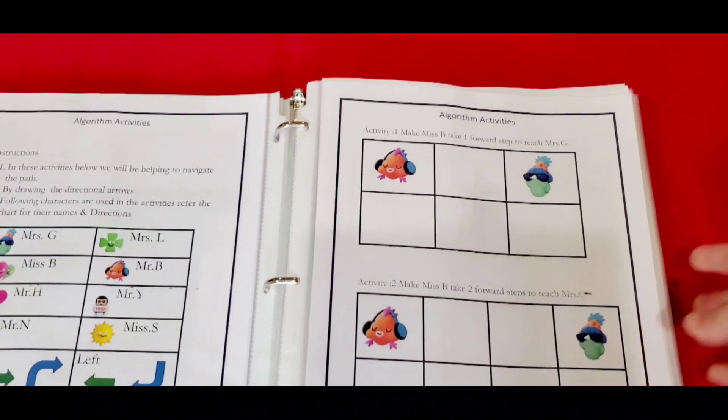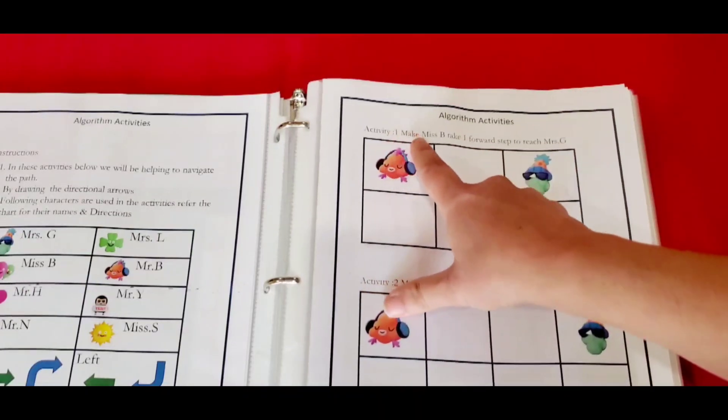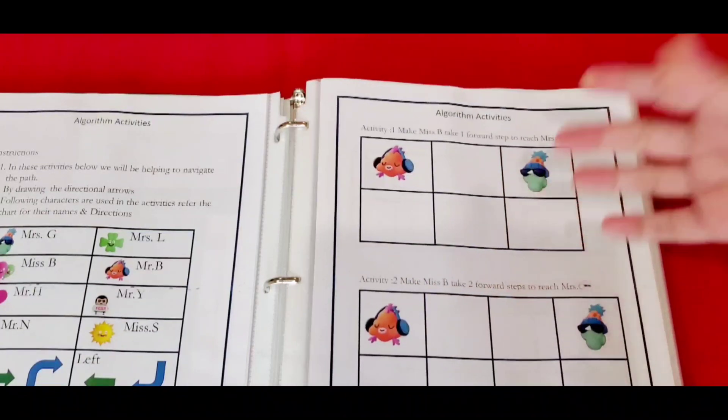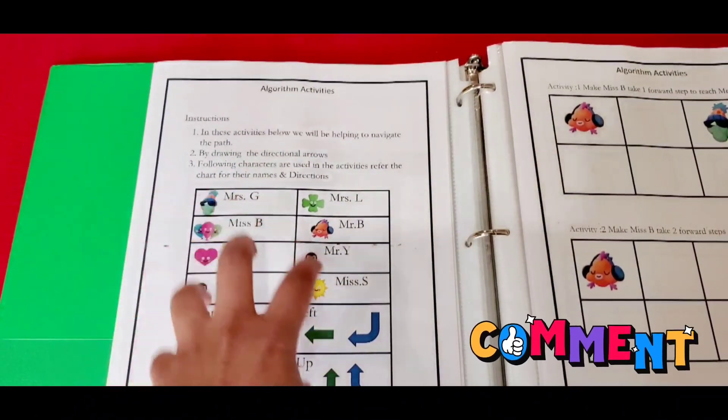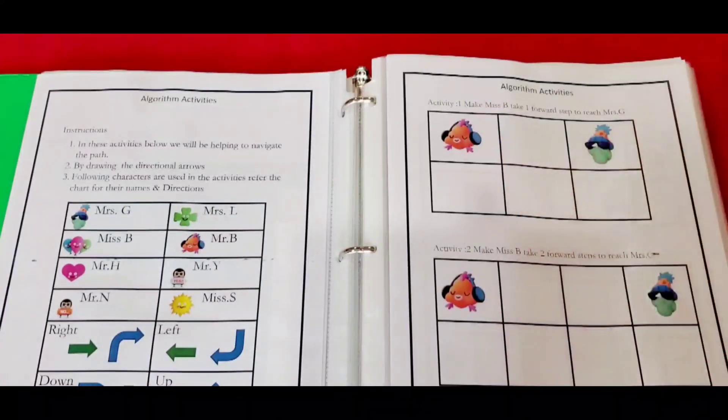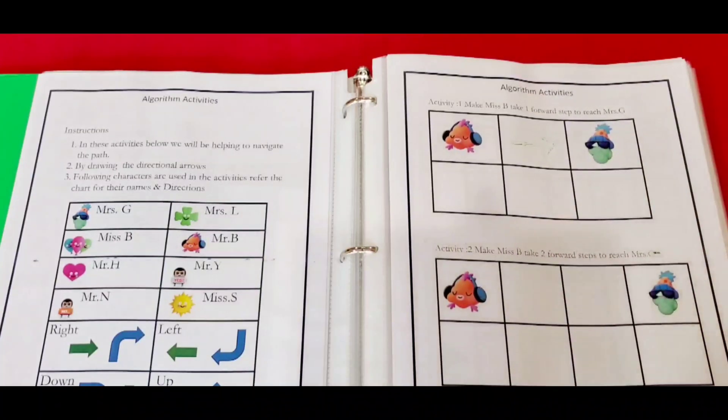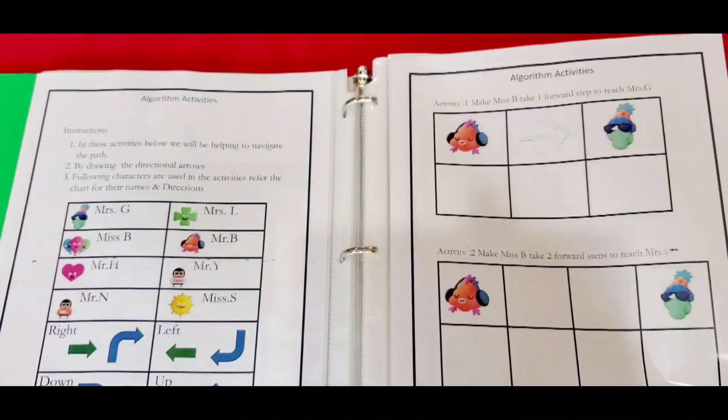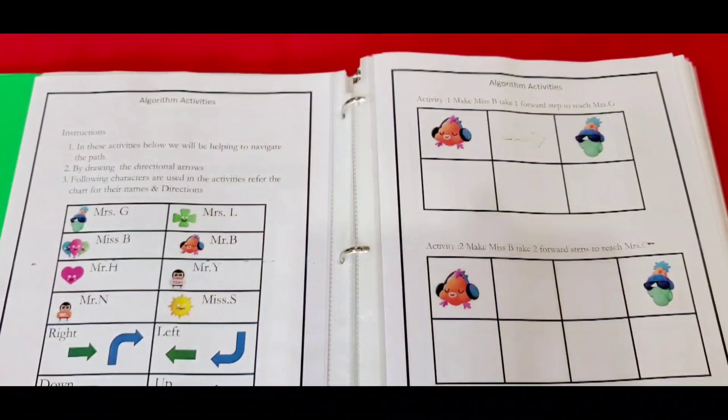Activity number one is how we're going to use these algorithms or directions into doing the basic step of coding. Number one is make Miss B take one forward step to reach Miss G. First, you need to know who is Miss B and Miss G. For that, you have to refer to the instruction module. Then with the help of a pen or pencil, you're just going to make one step forward. To reuse the sheets, I've always put them in my file folder sheets, the file protectors, and it's in my coding manual book.